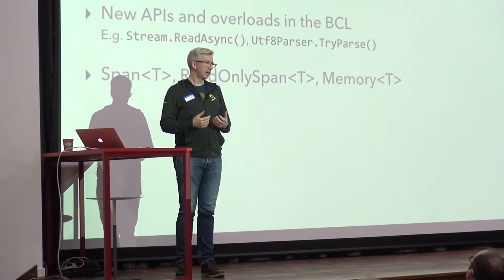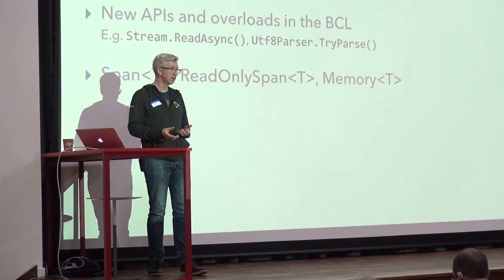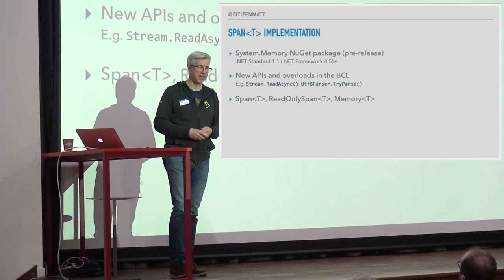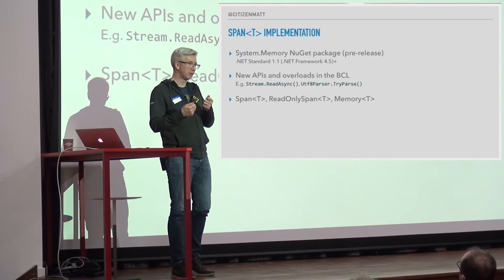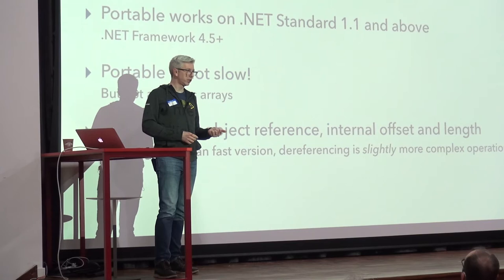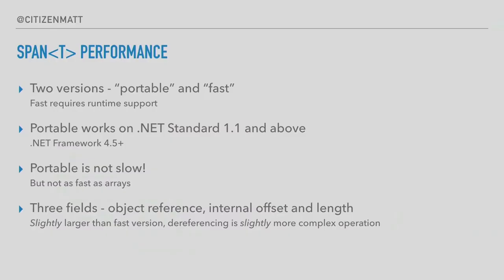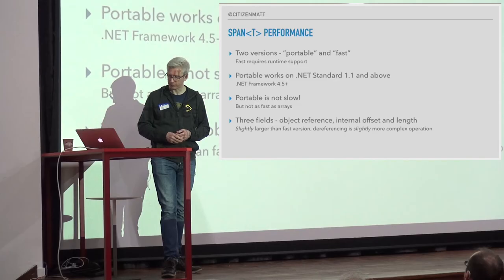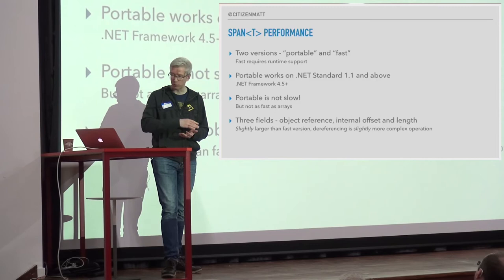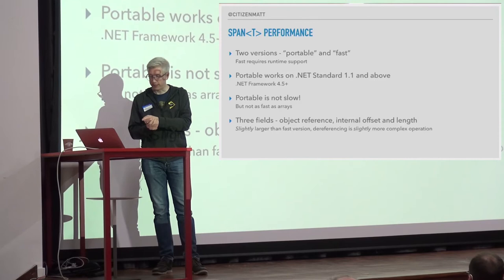Performance-wise there are two versions: portable and fast. The portable version is fast enough — not slow, just portable. The fast version has special runtime support. The portable version has three fields in the struct: a pointer to the data, an offset within it where you're starting, and the length. To access data it has to go pointer + offset + your index, which is slightly less performant but works on everything from .NET 4.5+ and .NET Core.